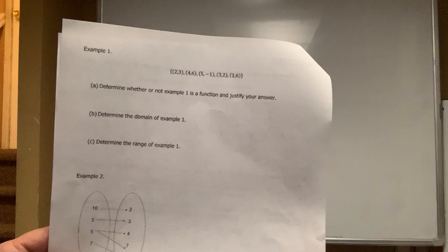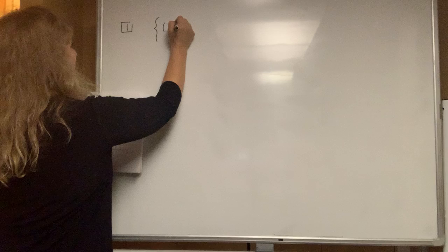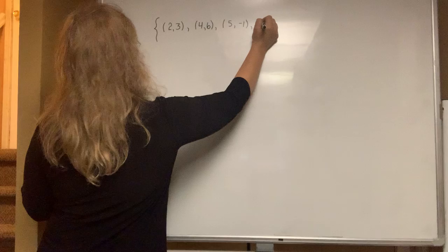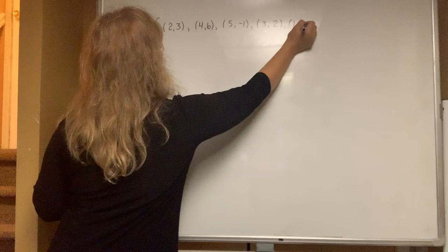Okay, we're up to page number two, which is actually short. Example number one lists for me a set of five points. The first point is (2,3). The second point is (4,6). The third point is (5,-1). The fourth point is (3,2). And the fifth point is (1,6).